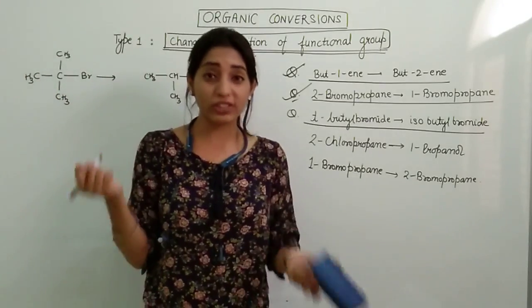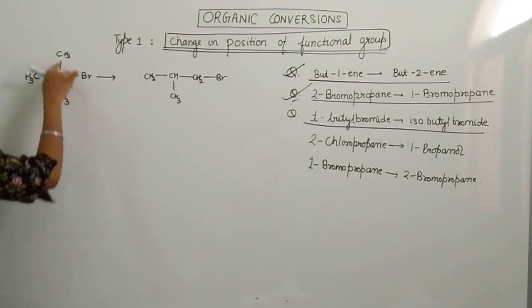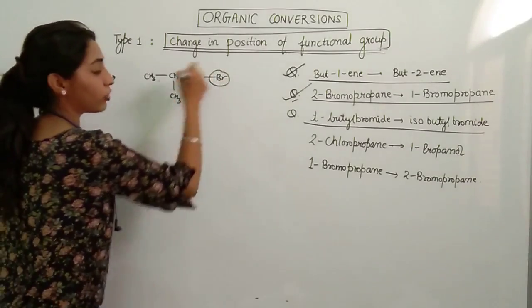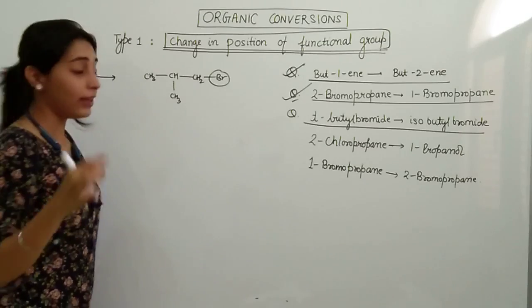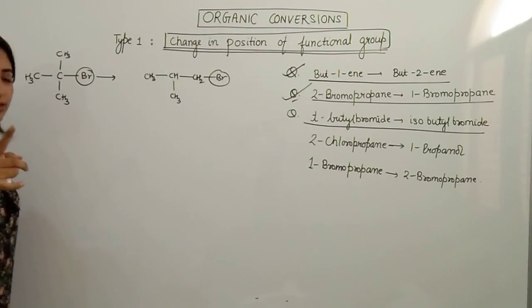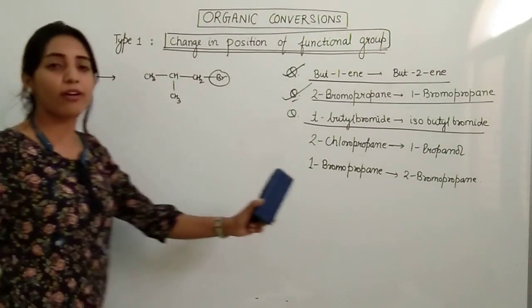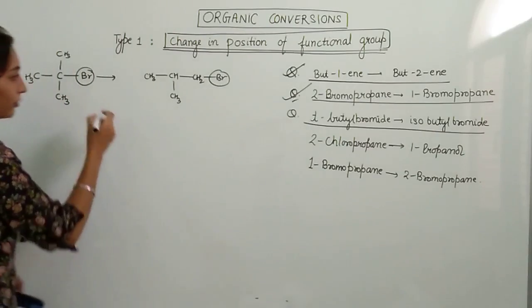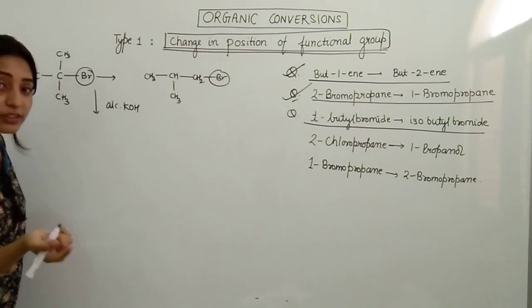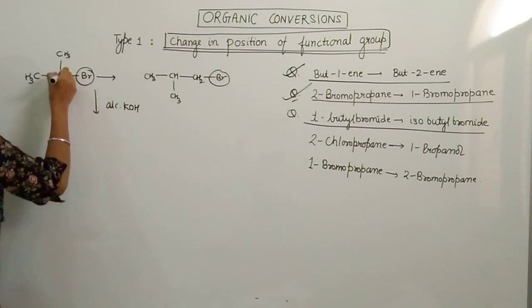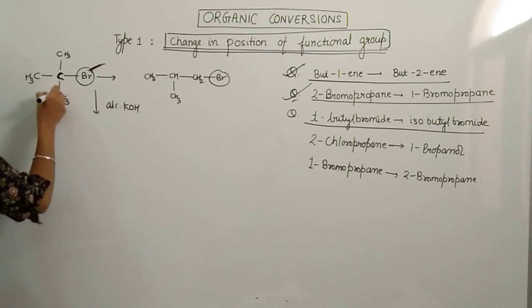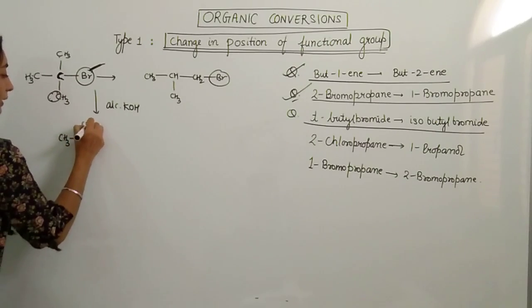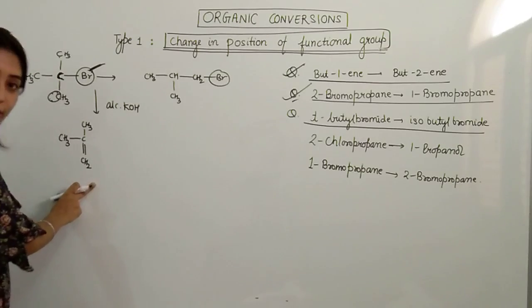Let's first try to figure out which category this belongs to. Carbon atoms are not changing, one two three four on both sides. It's just position of functional group which is Br that is changing. Now what did I teach you? First do elimination, first make alkene. And how to do that? Alcoholic KOH. When alcoholic KOH is added, this carbon loses one Br and the neighboring carbon loses hydrogen. And it will form an alkene. You got alkene?